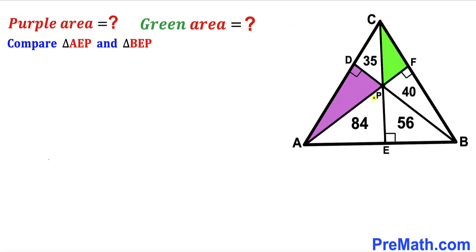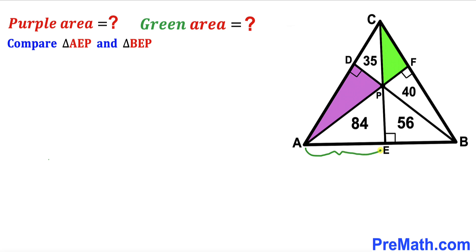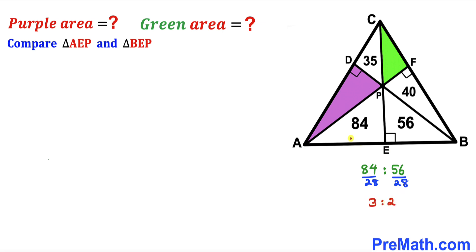Let's compare these two right triangles: triangle AEP and triangle BEP. The height of both triangles is the same, so the ratio of their bases equals the ratio of their corresponding areas. That gives us 84 to 56. Dividing both by 28, we get a ratio of 3 to 2. So the ratio of these sides is 3k to 2k for some constant k.